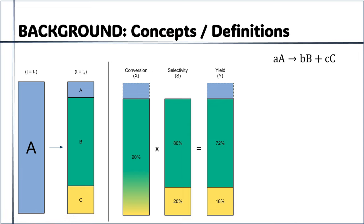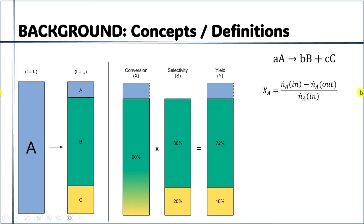At time zero, when no reaction is involved, you have entirely the reactant A. After some time, reactant A is converted into product B and byproduct C, and some reactant remains unconverted. The conversion of the reactant is defined as the number of moles of reactant A in the feed stream minus the number of moles of reactant A in the product stream, divided by the number of moles of reactant A in the feed stream — that is the fractional conversion of reactant A.